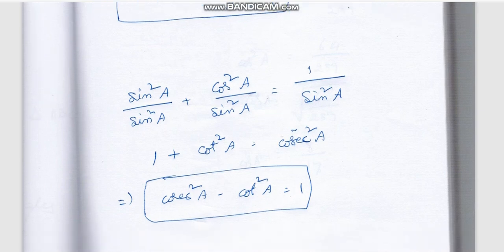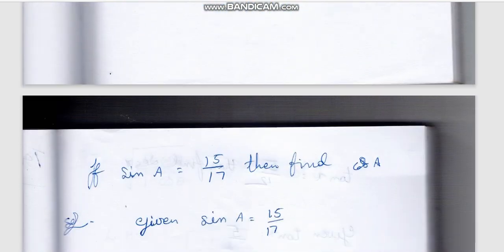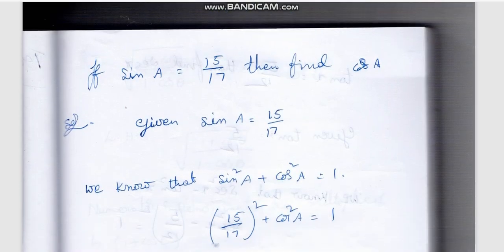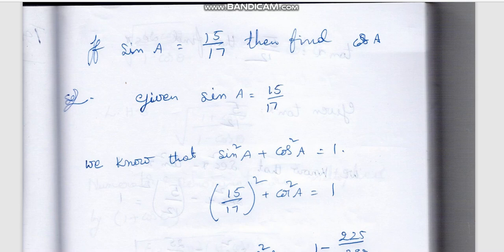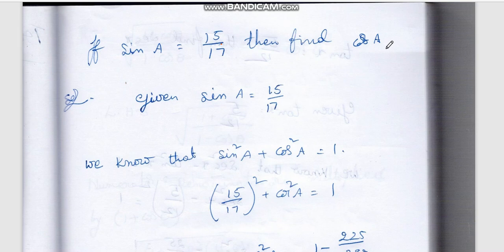OK. Based on these identities, let us solve some problems. These are the types of problems that appear in exams. From the April 2022 paper, this model problem appeared: Given sin a = 15/17, then find cos a — and also find tan a.